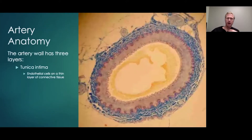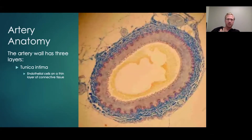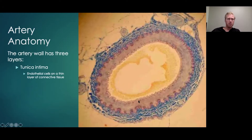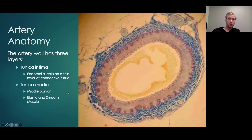To go back to the basics about atherosclerosis and blood vessel anatomy: the artery wall has three layers. The tunica intima is really just the endothelial layer — a very thin but important layer that is the interface with the red blood cells and intravascular cells that are circulating, a thin layer of connective tissue. The tunica media is the more middle portion, with elastic and smooth muscle mixed in there, providing much of the elasticity and contractile component of large blood vessels.